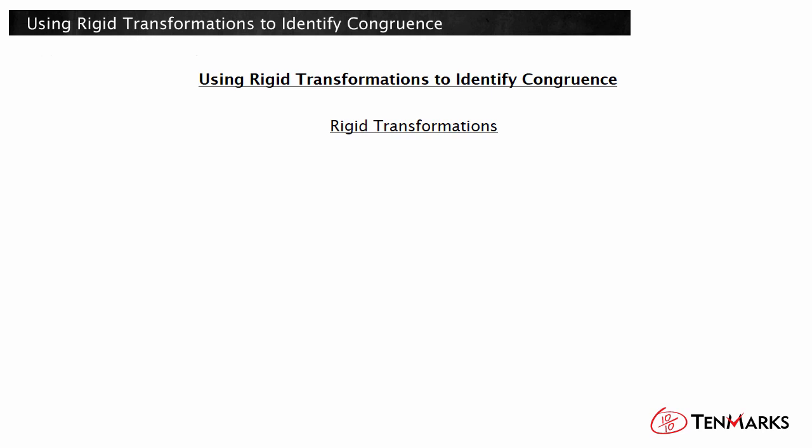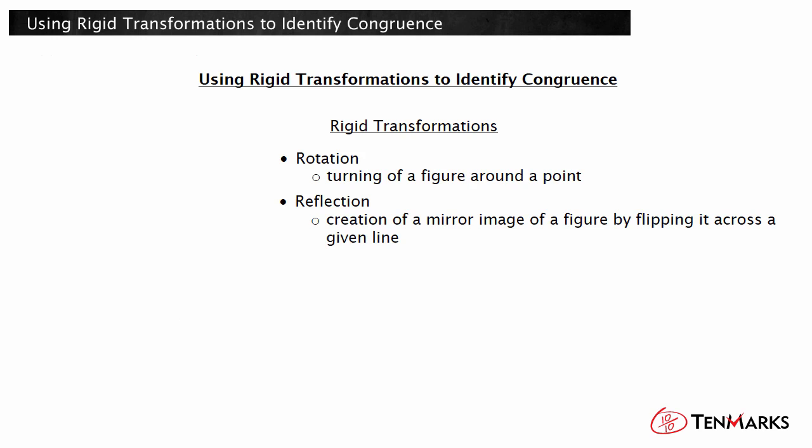Three common rigid transformations are rotation or the turning of a figure around a point, reflection or the creation of a mirror image of a figure by flipping it across a given line, and translation or sliding a figure a given number of units.